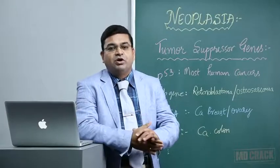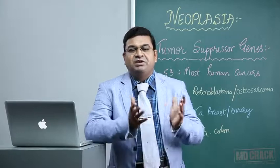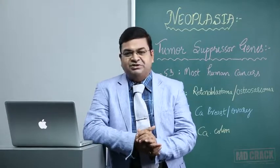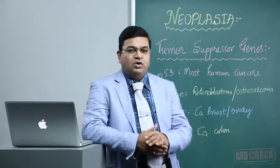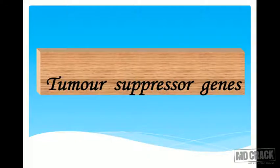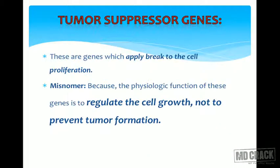Welcome back to the topic of tumor suppressor genes. There are so many genes which have this particular role of tumor suppression, but let us have a look at only a few selected tumor suppressor genes. The term 'tumor suppressor gene' is actually a misnomer because the physiological function of these genes is to regulate cell growth, not to prevent or suppress tumor formation. They are the ones which apply brakes to the cell cycle.